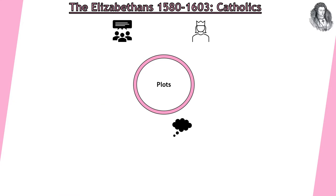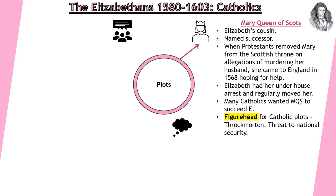Let's look at some of the plots. Let's start by talking about Mary Queen of Scots. Mary Queen of Scots is Elizabeth's cousin. She's also named successor because Elizabeth does not have any children of her own. The problem with Mary is that she is Catholic, and she can rightfully claim the throne because she has Tudor blood. When the Protestants removed Mary from the Scottish throne on allegations of murdering her husband, she came to England in 1568 hoping for help. She had formerly been married to the King of France before he died, but she was overturned from the Scottish throne and comes to Elizabeth for help. Elizabeth has a difficult decision to make.